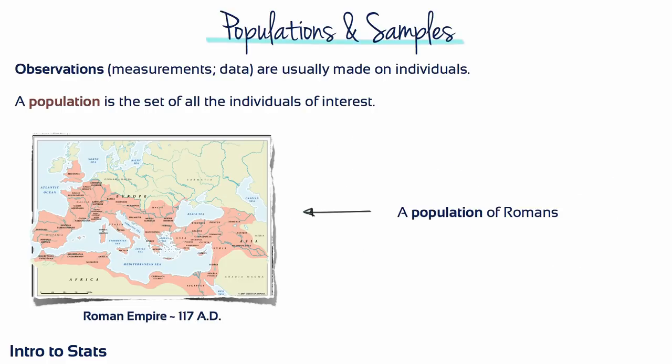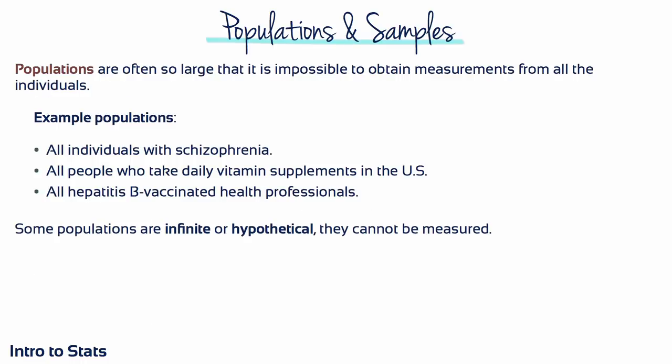Researchers usually study a sample, but they're really interested in answering a question about a specific group of individuals. In statistical terminology, the entire group that a researcher wishes to study is called a population. Populations can obviously vary in size, from extremely large to very small, depending on how the investigator defines the population.